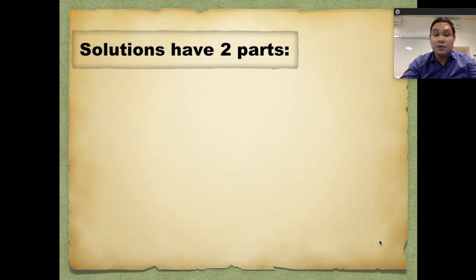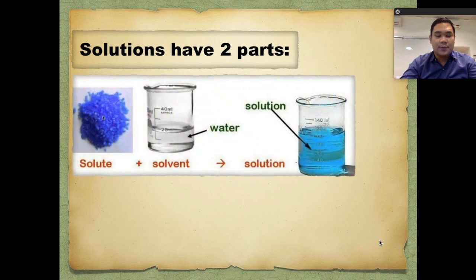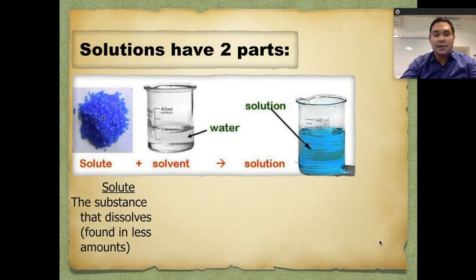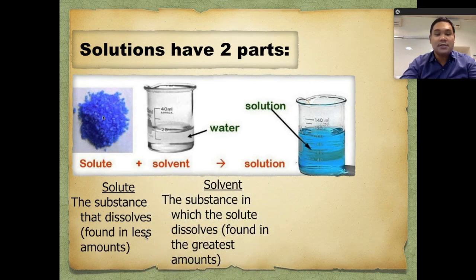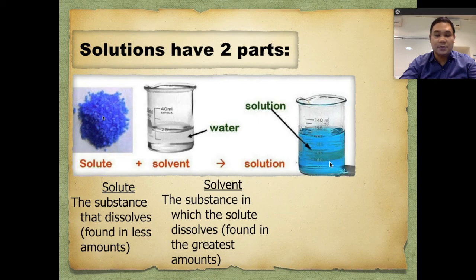Solutions have two parts: solute and solvent. The solute is the substance that dissolves, or usually the substance found in lesser amount. The solvent is the substance in which the solute dissolves, or usually found in the greatest amount. For example, copper sulfate placed in water and mixed forms a copper sulfate solution. We cannot distinguish which is the copper sulfate and which is the water — we just see a blue-colored solution.